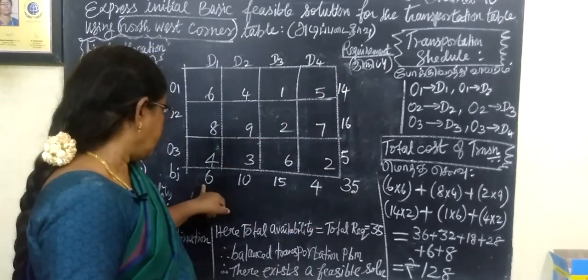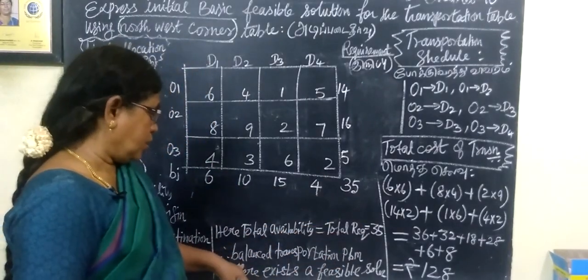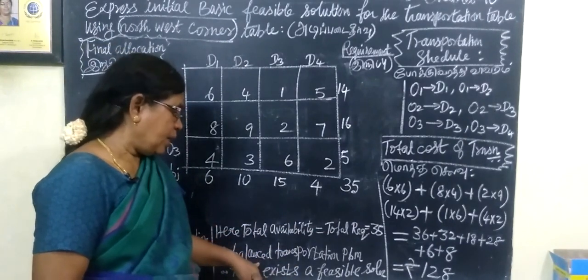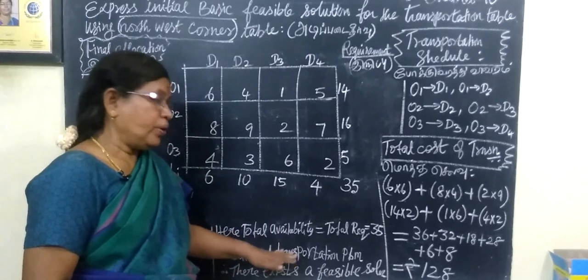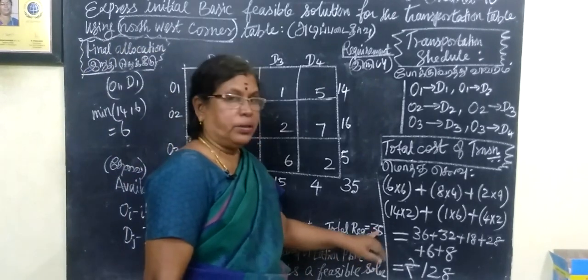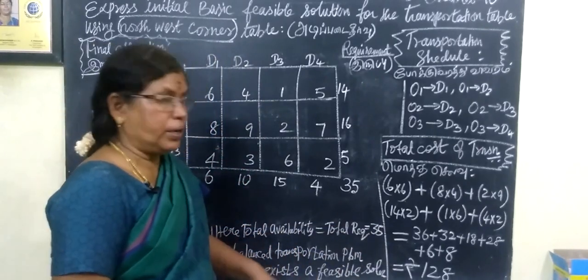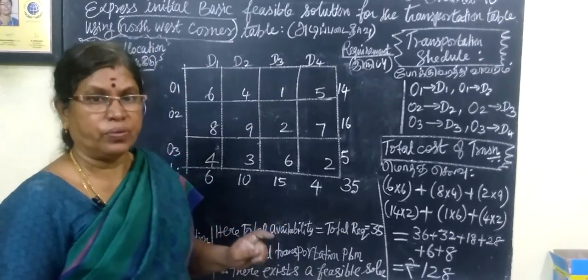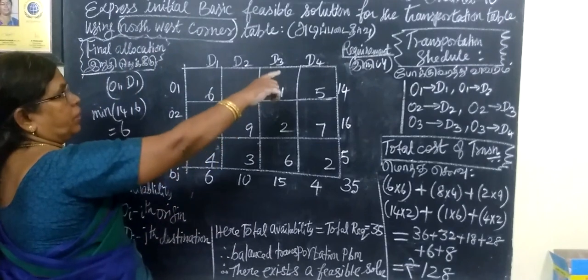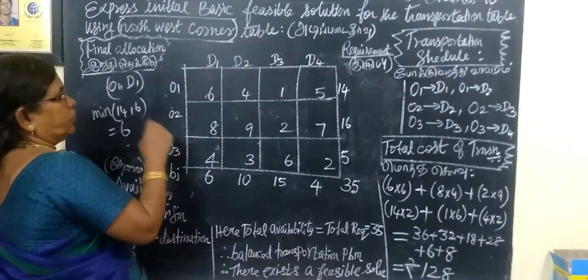Once again you add and check — this is correct. So the problem is ready to proceed. The given problem is balanced since the total availability and total requirement are equal. The given problem is balanced to the transportation problem, so there is a feasible solution. The requirement is available.